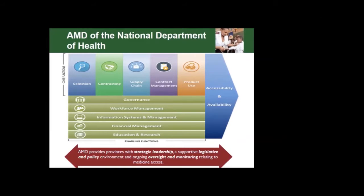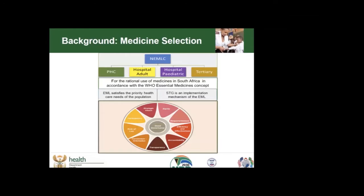The Affordable Medicines Directorate provides strategic leadership, a supportive legislative and policy environment, as well as ongoing monitoring relating to medicine access via our National Surveillance Center. Within Affordable Medicines is a team of passionate people that deal with the contracting of medicines, supply chain, contract management, and we have the Essential Drugs Program that deals with medicine selection and use. The Essential Drugs Program oversees the development and implementation of the Standard Treatment Guidelines and the Essential Medicines List through a committee of clinical experts called the National Essential Medicines List Committee.